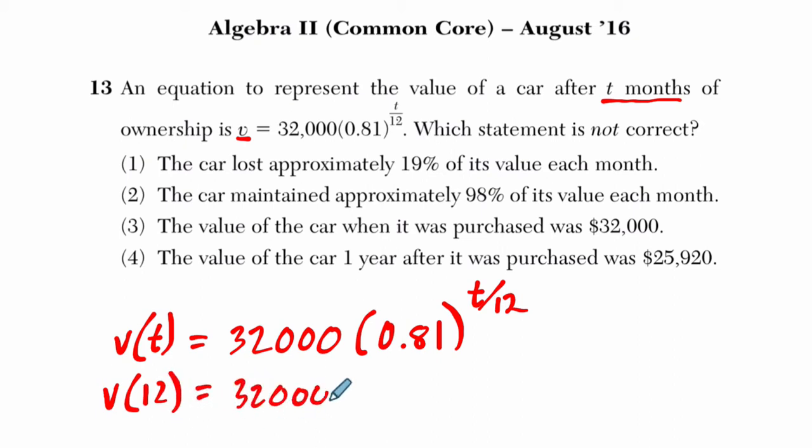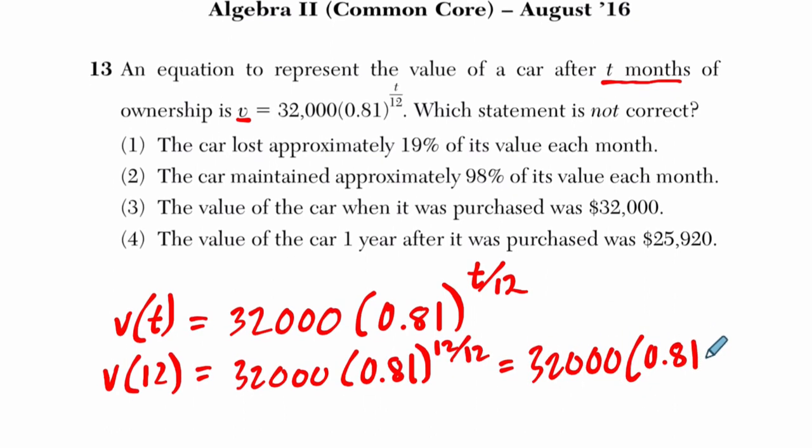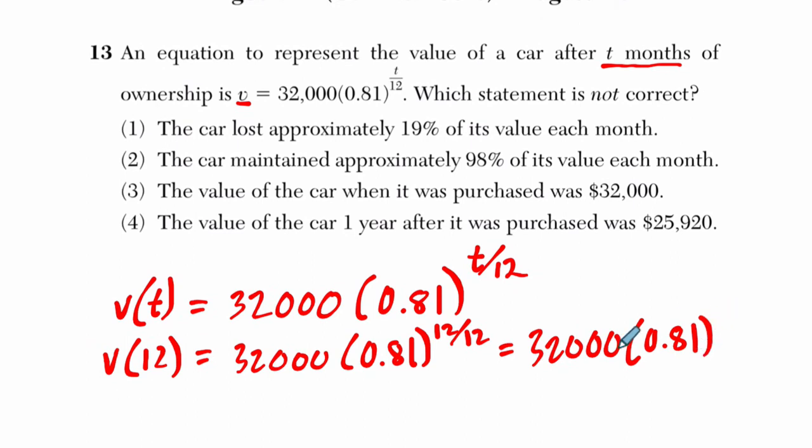We get 32,000 times 0.81 to the 12 divided by 12, and that's going to equal 32,000 times 0.81 to the first, and that's one year, and that gets us 32,000 times 0.81.